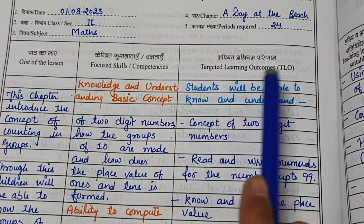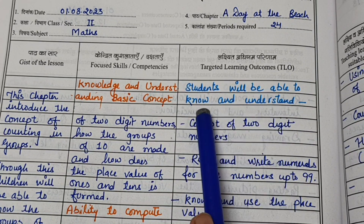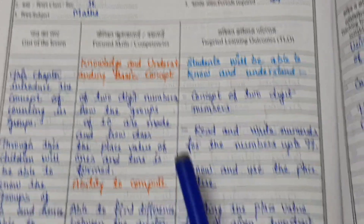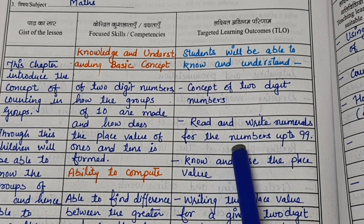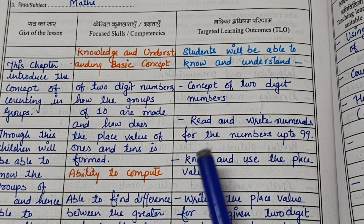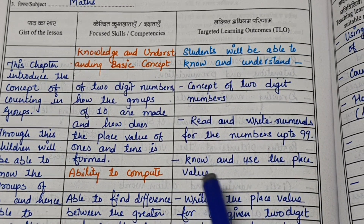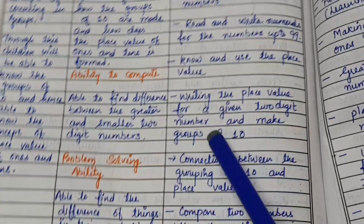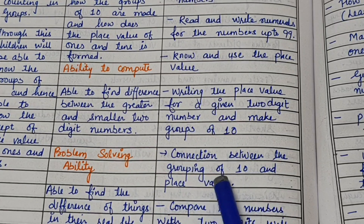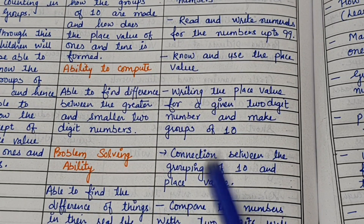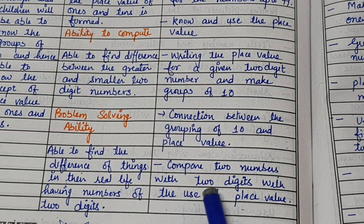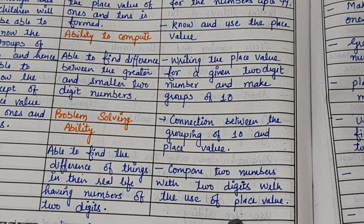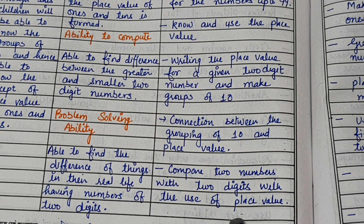Now let's talk about learning outcomes. Students will be able to know and understand the concept of 2-digit numbers from 10 to 99, then read and write numerals for numbers up to 99. They will know and use place value — writing the place value for a given 2-digit number, make groups of 10, understand the connection between grouping of 10 and place value, and compare 2-digit numbers using place value. These are the learning outcomes we expect every child to achieve.